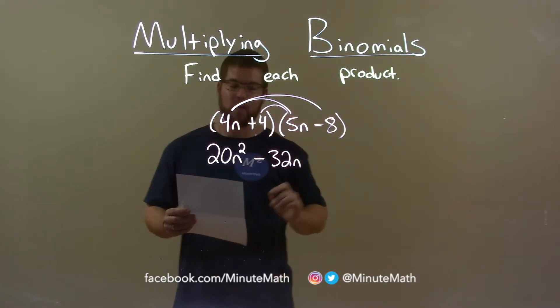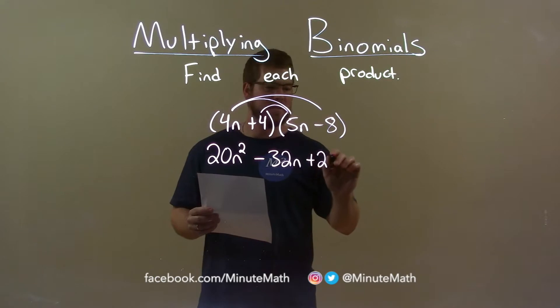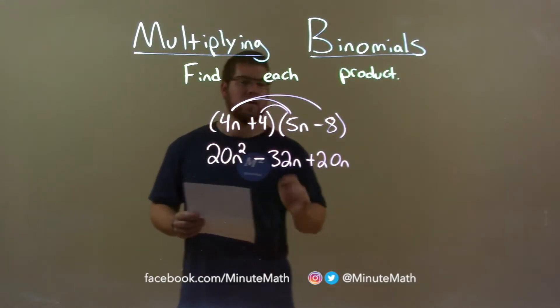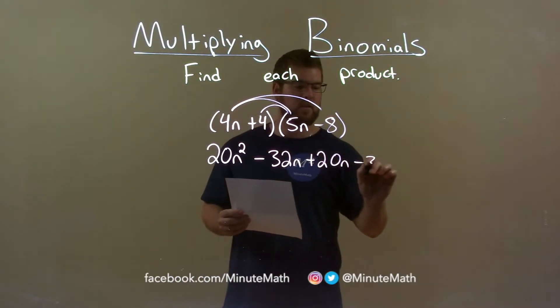4 times 5n is 20n, and 4 times minus 8 is minus 32.